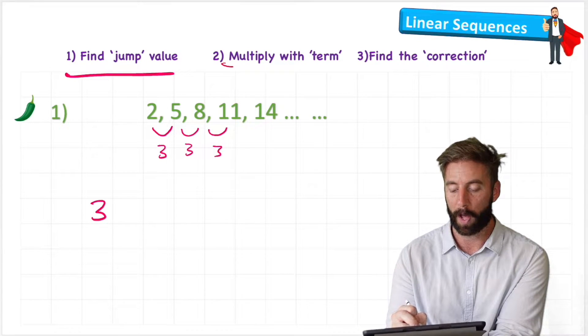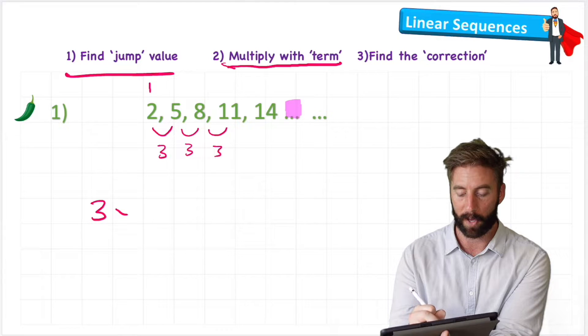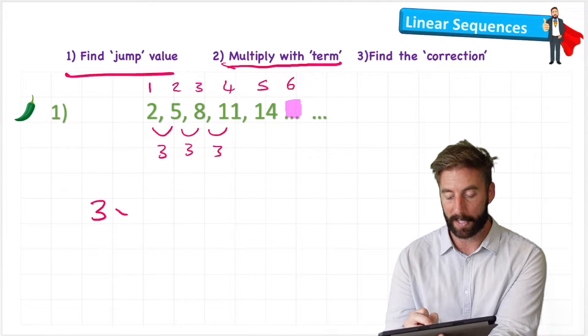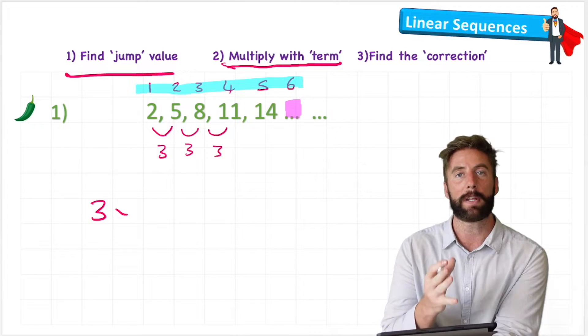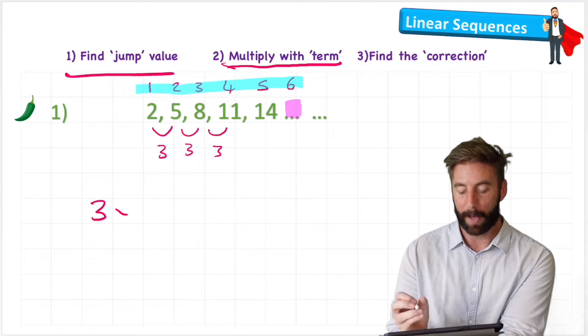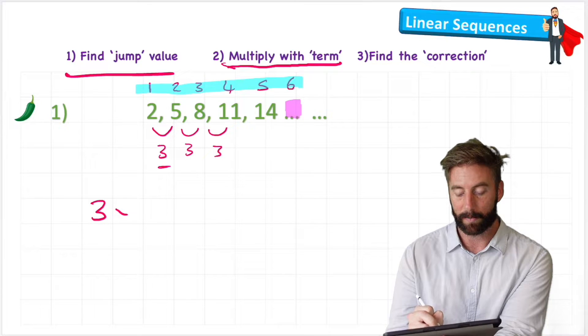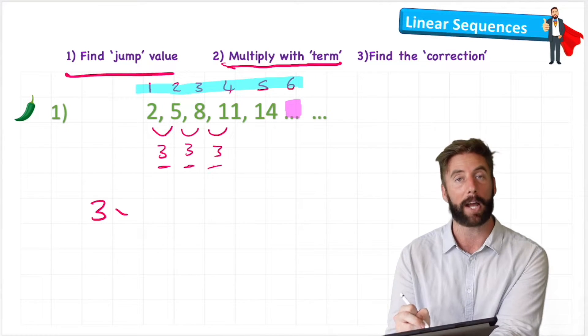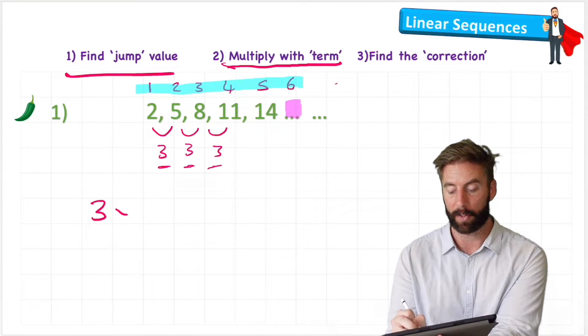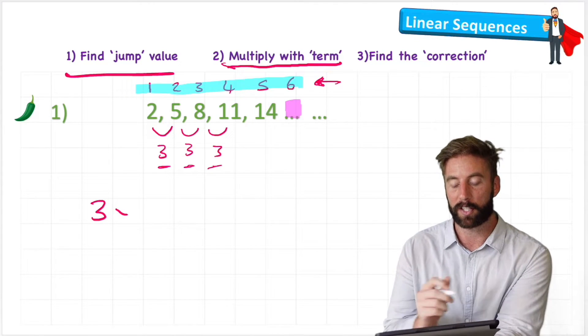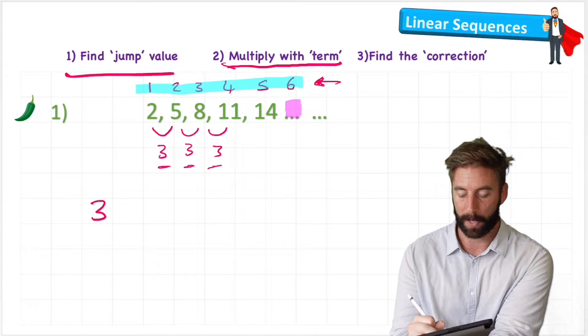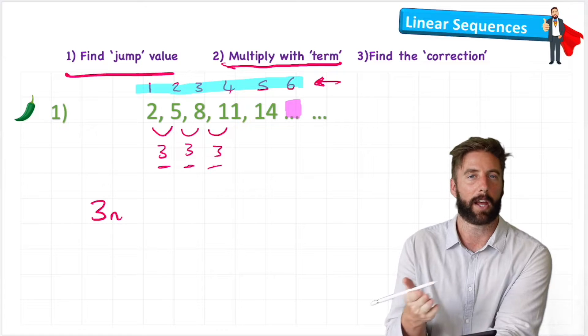And then it says to multiply with the term. So this will be my first term, my second, third, fourth, fifth, and then the one we're trying to find is sixth. And we call these numbers up here the terms, and it just means the number in the sequence. Now if we think about it, if we're going up in threes, then it's a bit like the three times table. So if I multiply my 3 by my term, these numbers here in the blue line, then I'm going to get somewhere close to the sequence value. So to show that, I can write 3n, choosing n like number.